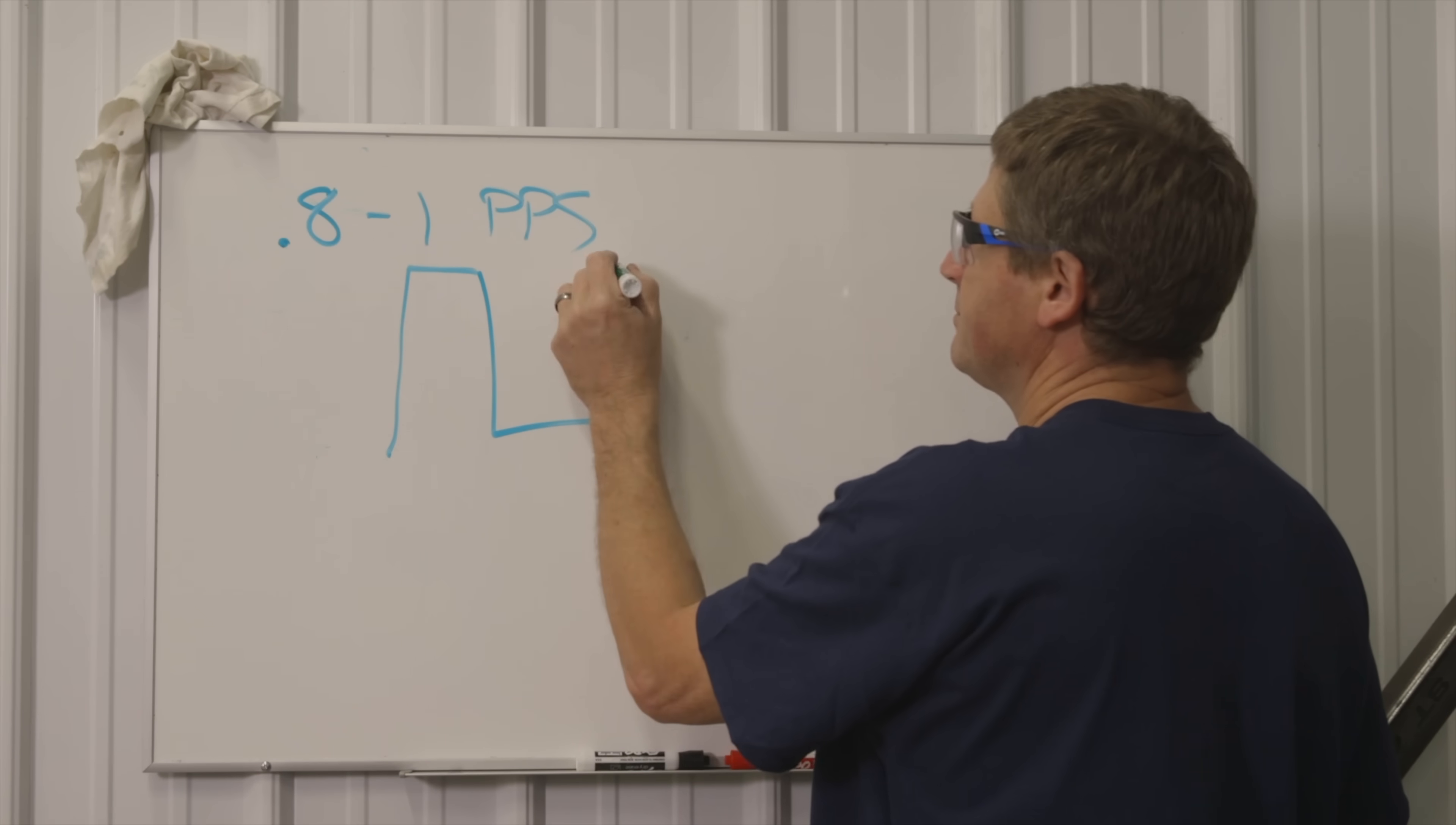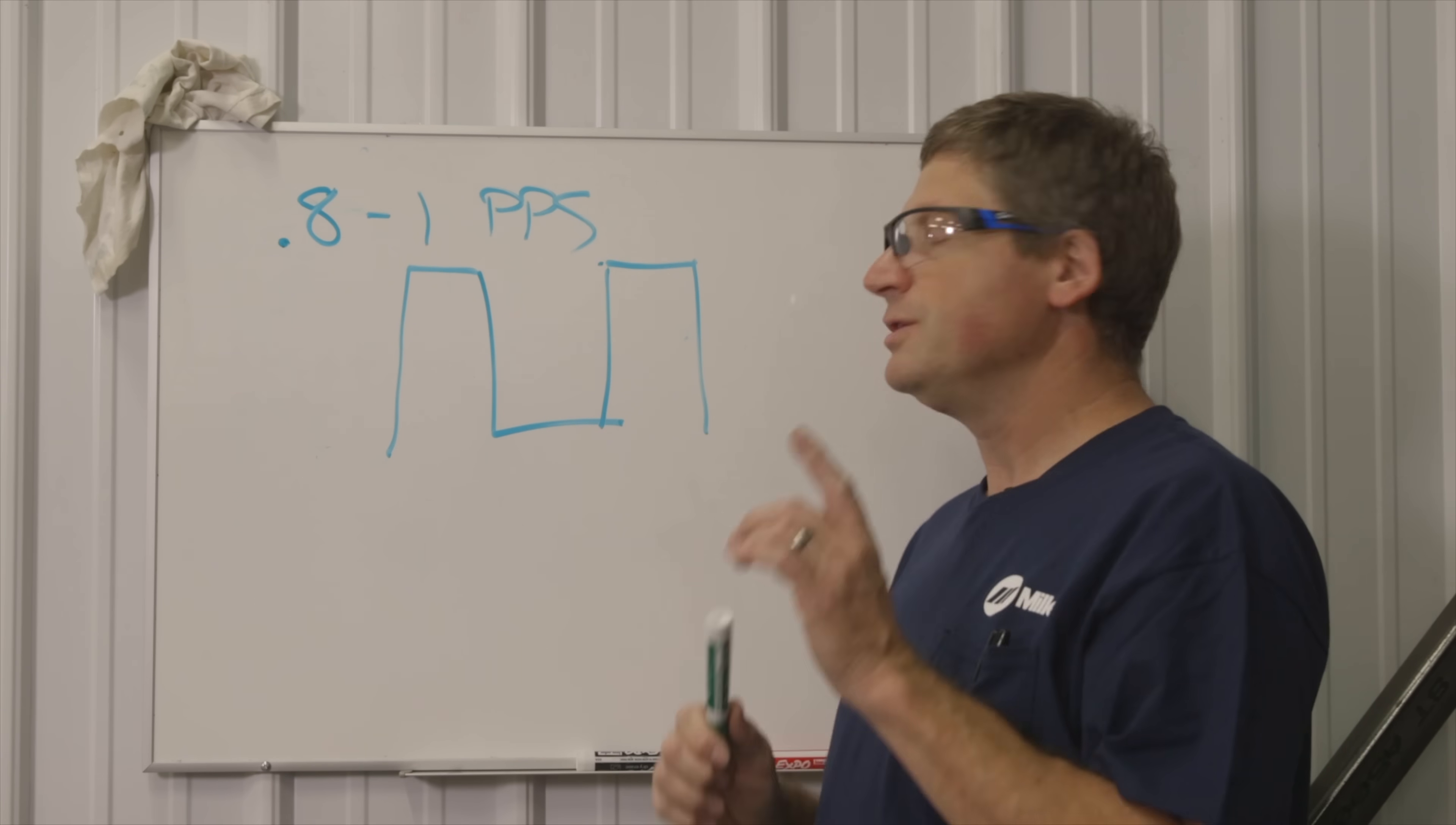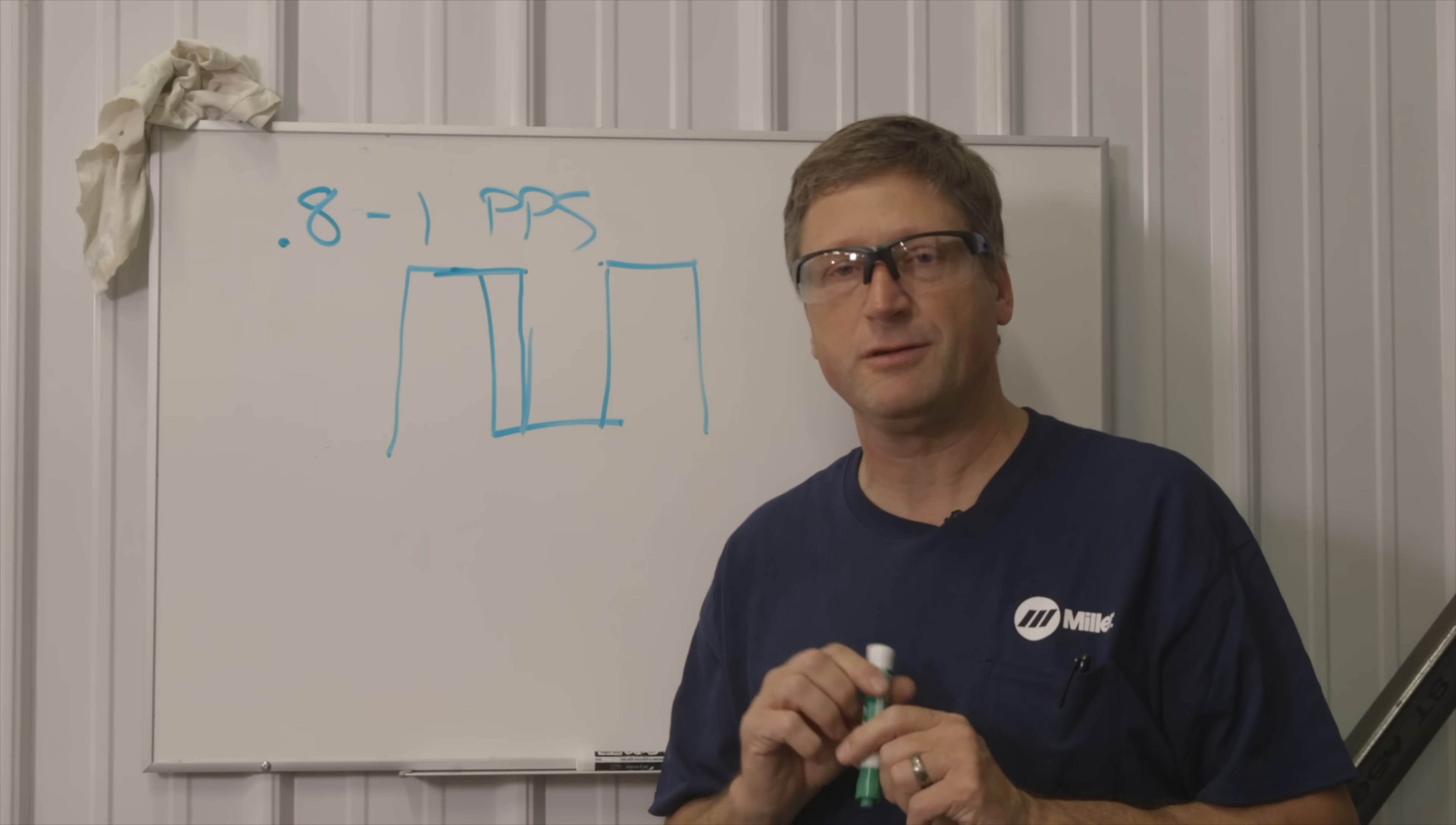Every time it pulses to that low level I'm moving the TIG torch over waiting for that next pulse. So as I'm learning to deposit that filler metal into the weld puddle I'm making sure that I'm getting that rhythm just right. If you're having a problem getting that filler metal into that puddle quick enough you can either lower that pulse per second which gives you a little more time to put the filler metal in the puddle, or you can increase that peak time. That means the arc will be at its high level for a little longer period of time giving you the time you need to deposit the filler metal in.